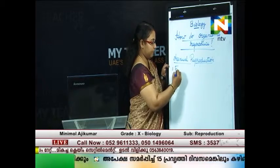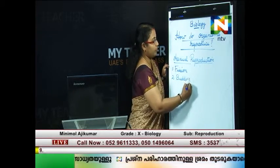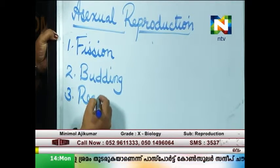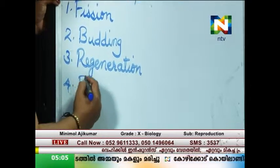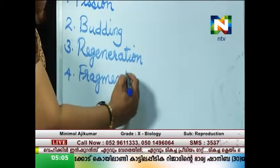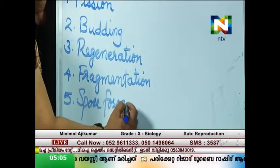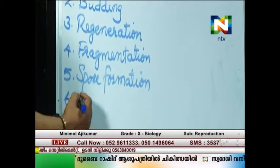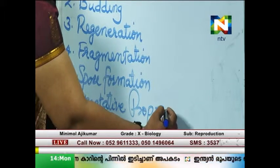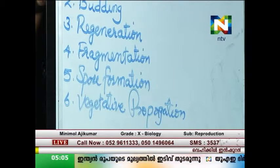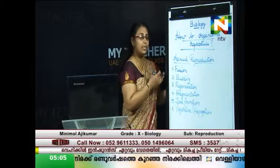The six different modes of asexual reproduction are: fission, budding, regeneration, fragmentation, spore formation, and finally vegetative reproduction or vegetative propagation. Organisms reproducing asexually follow any of these methods to produce their young ones.